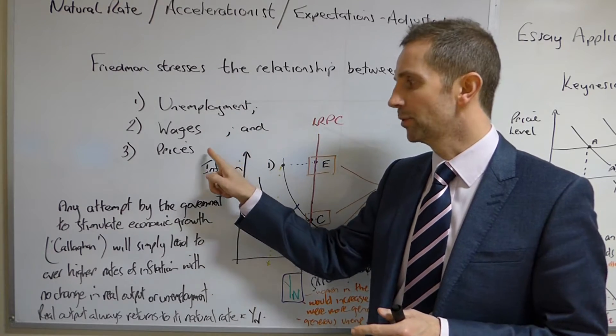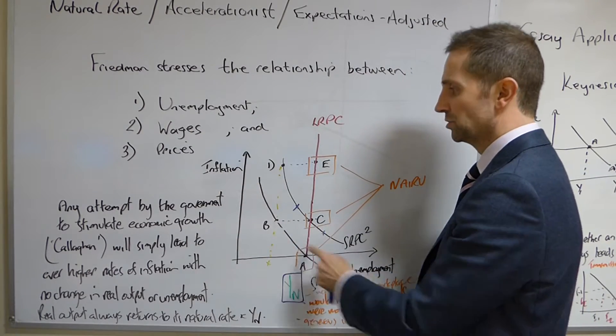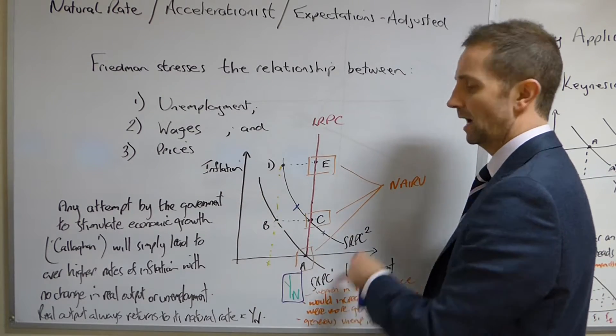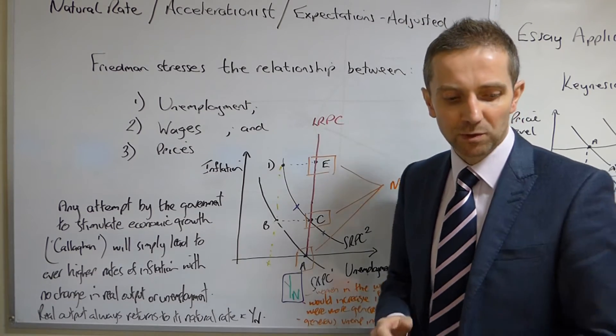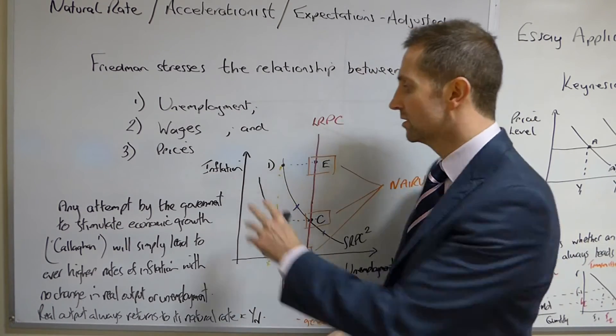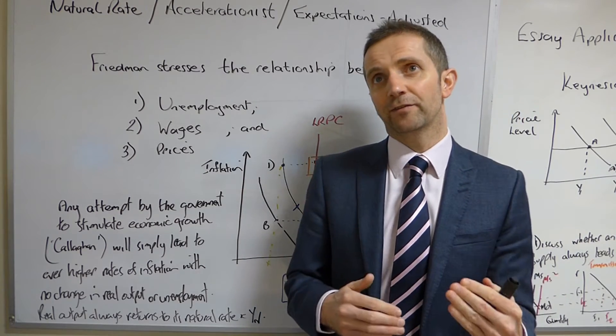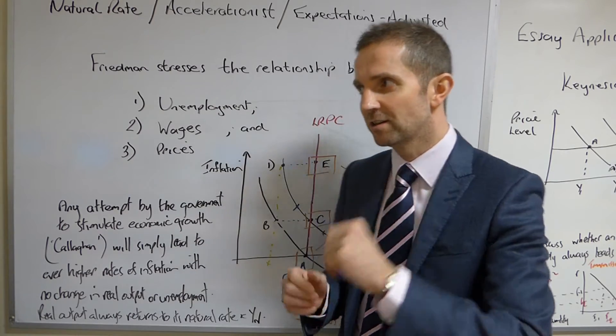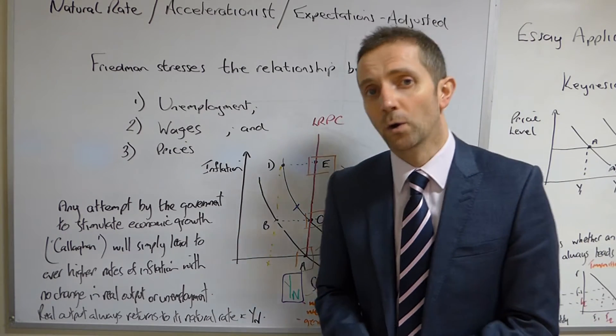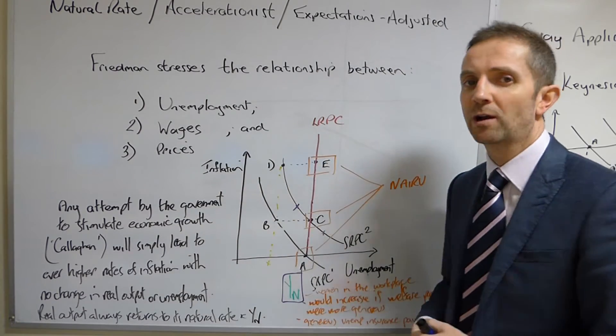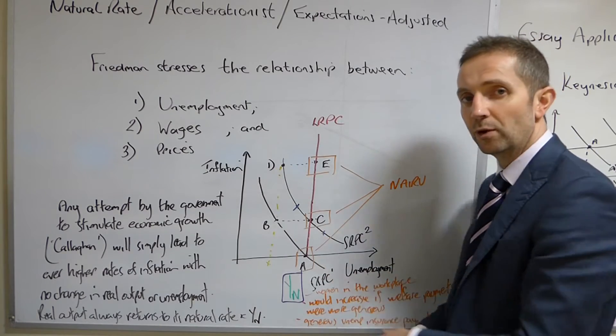This can be illustrated by this particular diagram where we have what we would call the traditional trade-off, the Phillips curve trade-off here between inflation and unemployment and we've got a few short run Phillips curves here. When Friedman was writing he looked at the data for inflation and unemployment for a few quinquennia, so between a few five year periods and in the late 50s early 1960s he observed a pattern and the pattern was that either inflation was rising and unemployment was falling or inflation was falling and unemployment was rising. Indeed the empirical evidence in his Nobel lecture suggests that this short run relationship between inflation and unemployment did actually exist.